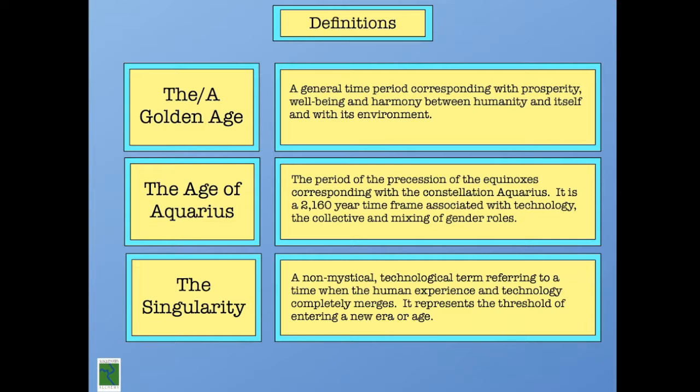The second definition is the age of Aquarius. This gets into the language of the procession of the equinoxes. We are moving into the age of Aquarius, defined by the constellation Aquarius rising in the western or northern hemisphere on the equinox. As a subjective aspect, the age of Aquarius is associated with technology, the collective, and also the mixing of gender roles.